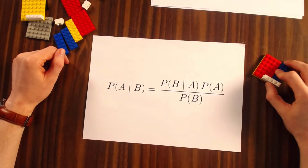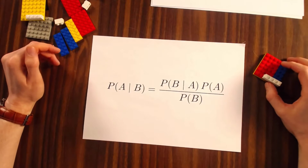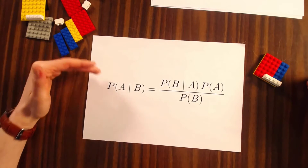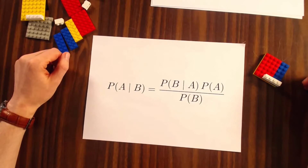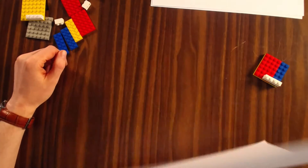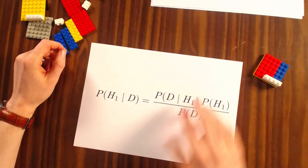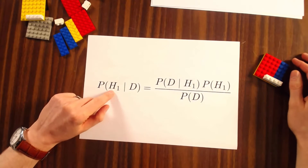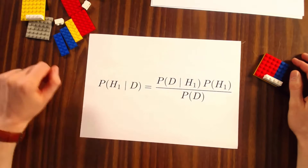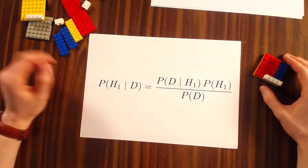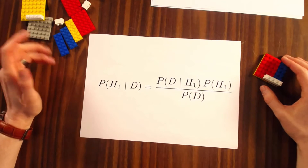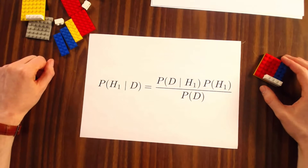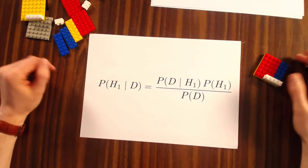What we want to find out with Bayes' Theorem is the probability of A given B. Actually, we better say that we want to know the probability of a certain hypothesis given the data. In frequentist statistics we are always interested in the probability of data given a certain hypothesis, and in this case we want to know the opposite.